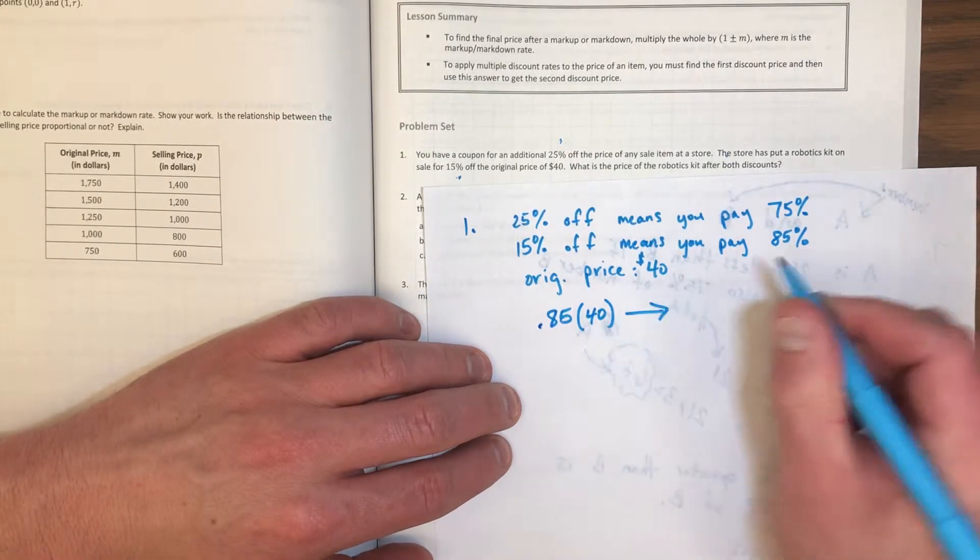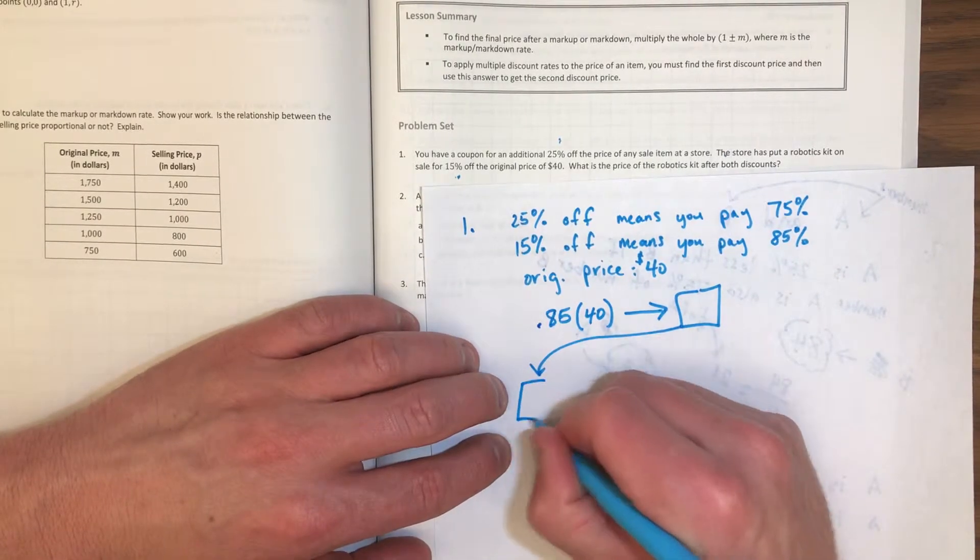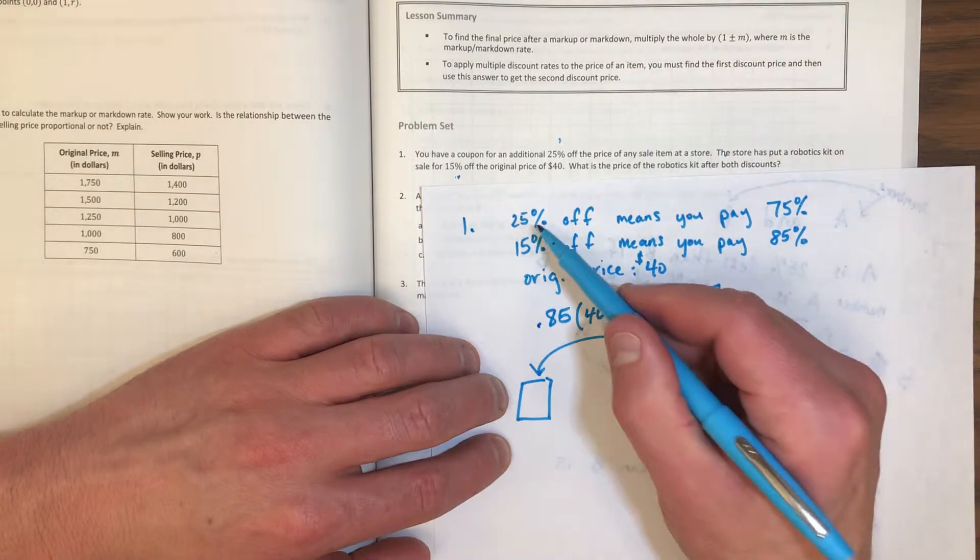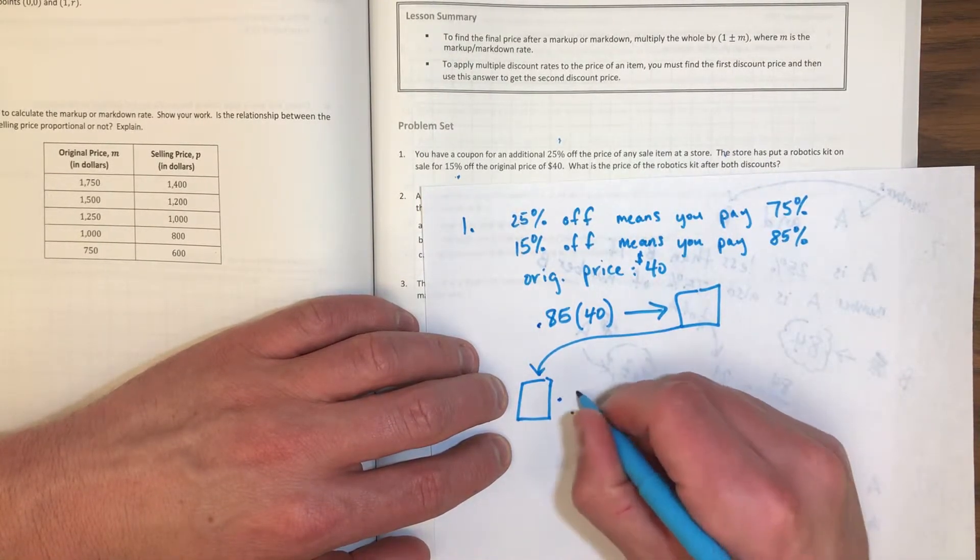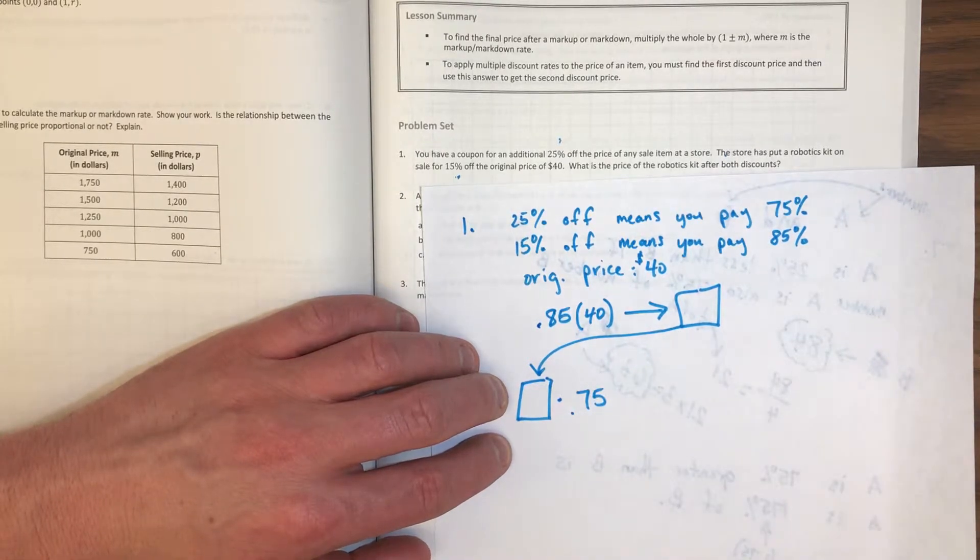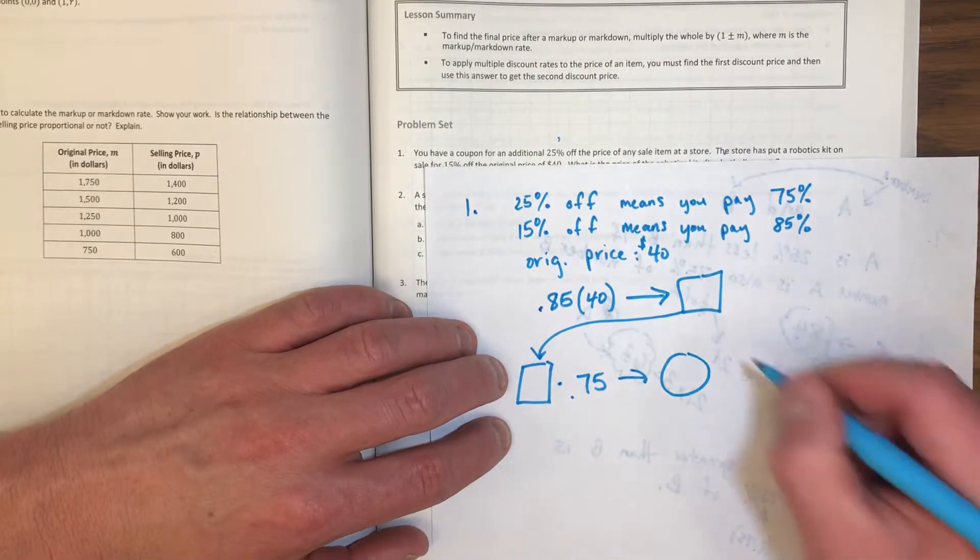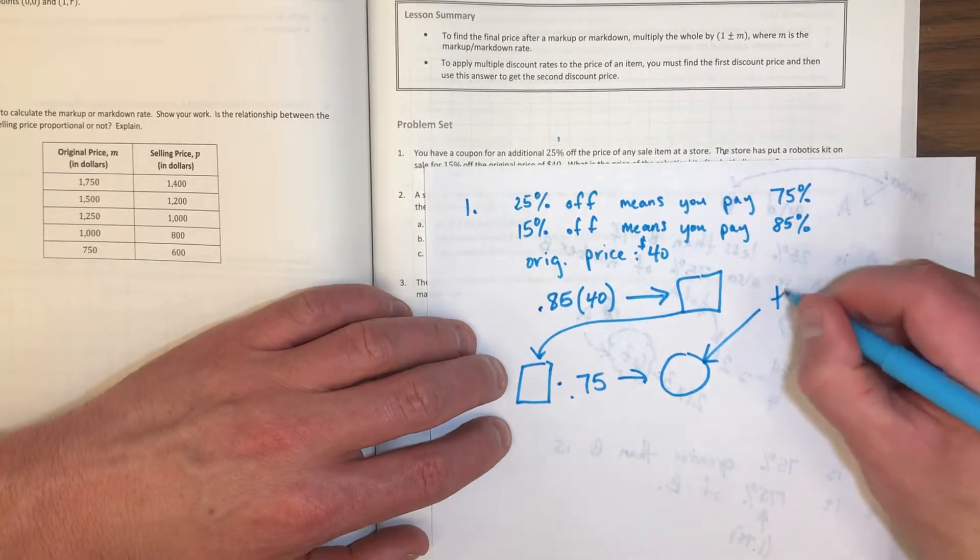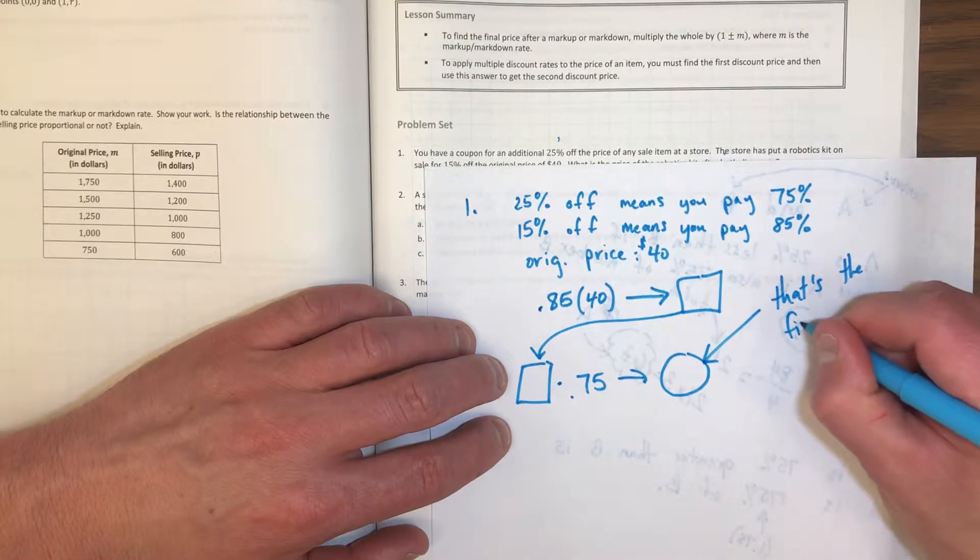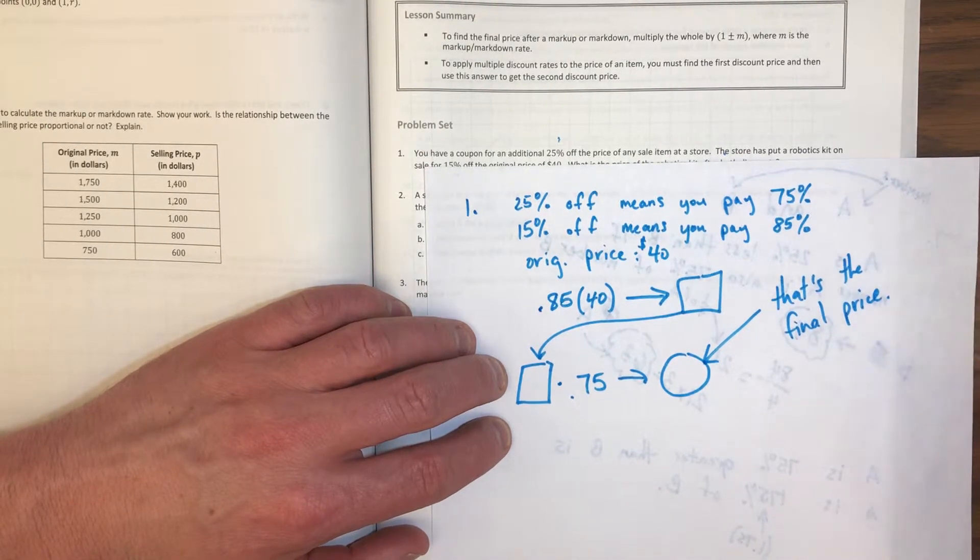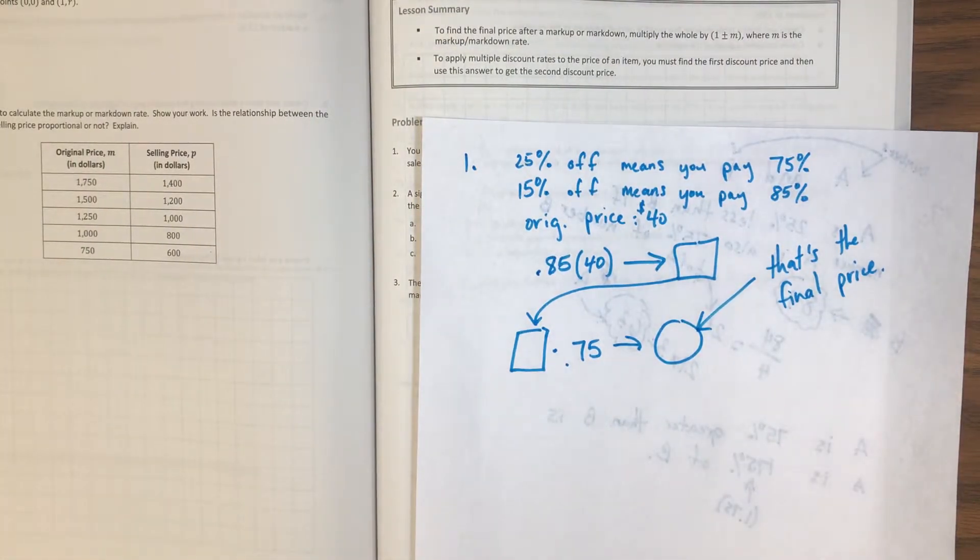So I could take the original price of $40, figure out what 85% of it is, then take that number and figure out what 75% of that number is, and that's going to be my ultimate price. So the final price, whatever you want to say. So the calculations would be 0.85 times 40 - that would get me some number that would go in this box. And then I would take that number that's going to be in the box, and I want to take an additional 25% off of it, so that means multiply it by 0.75 to get what 75% is, and that's going to get me a whole new number that I'll put in here. And whatever number goes in here, that's the final price. I'm not going to do this one for you. I'm just going to give you those hints.